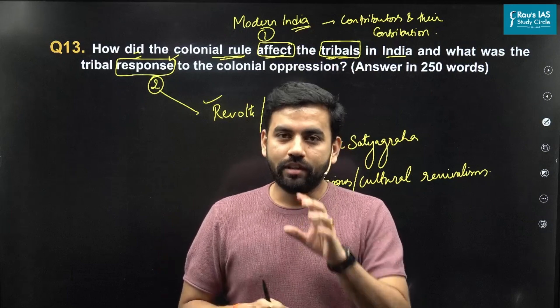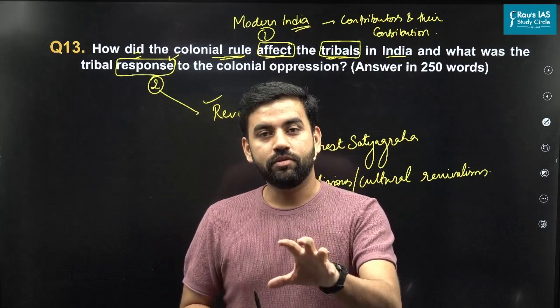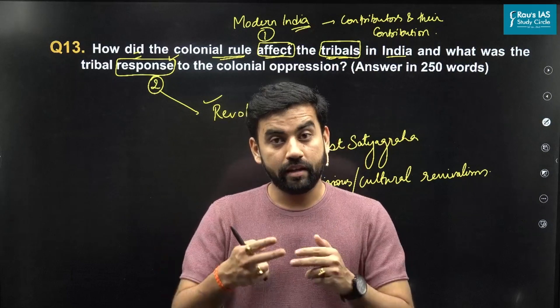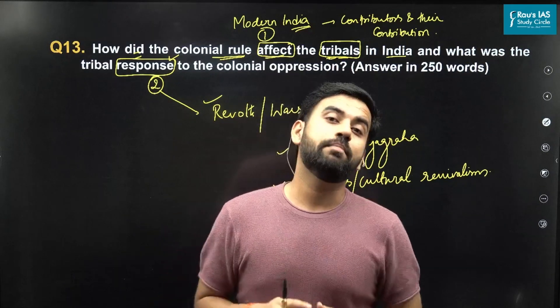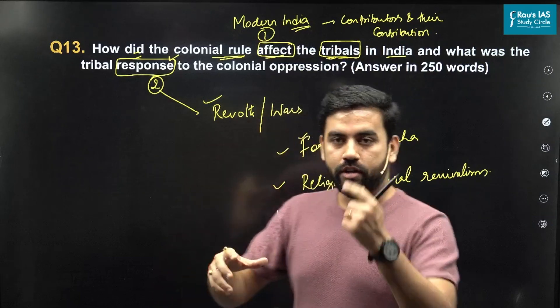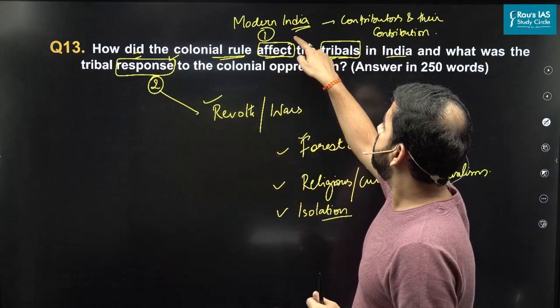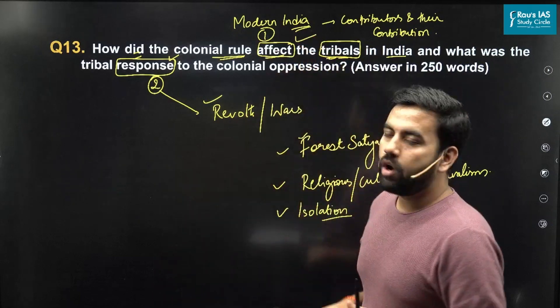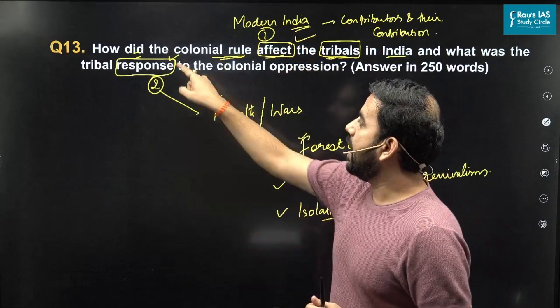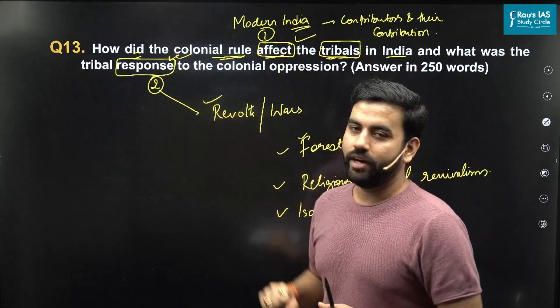These are the responses that you have to write in the answer, but they should form the second part. So the body can be divided into two: first, what was the effect of British rule, and second, how it was responded to.